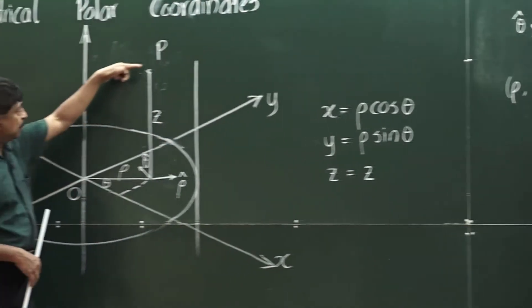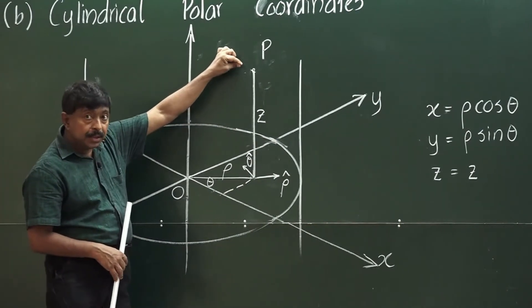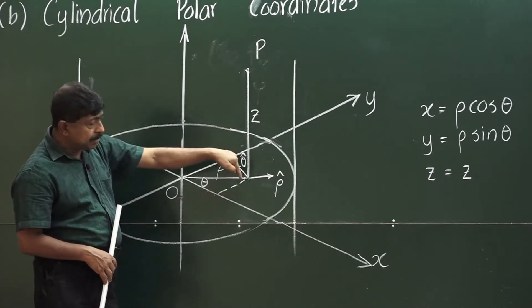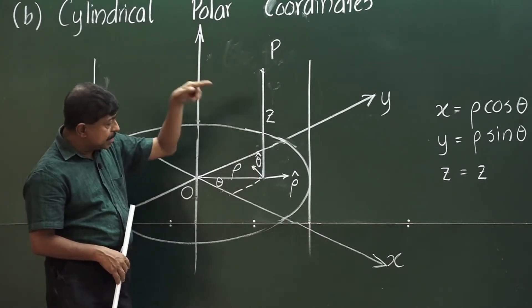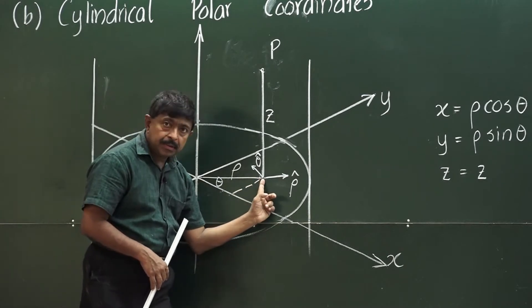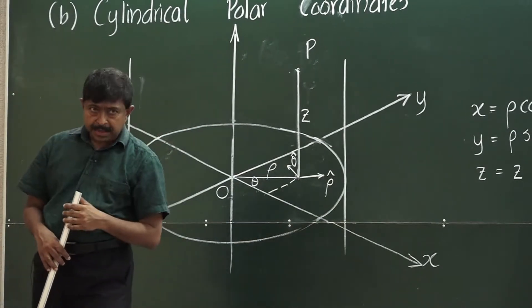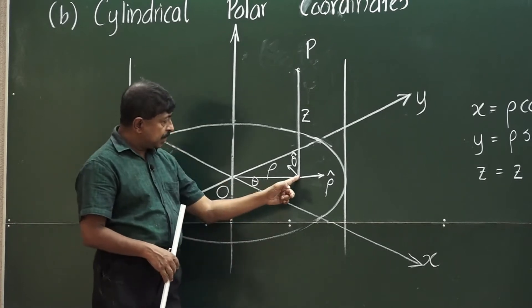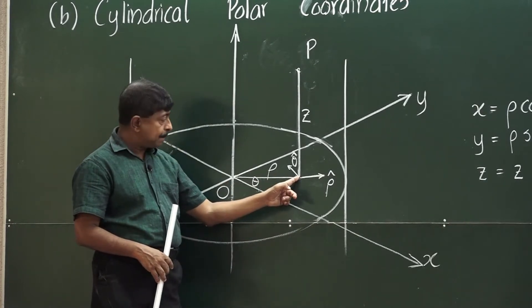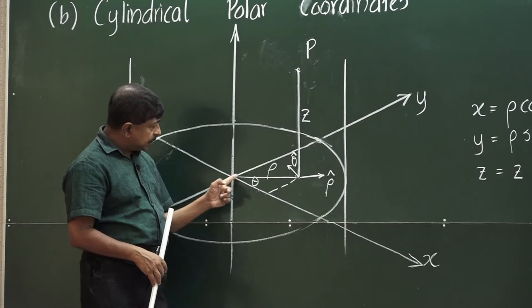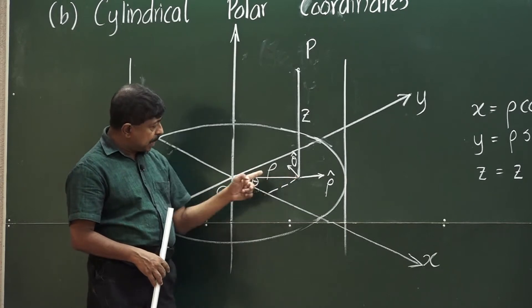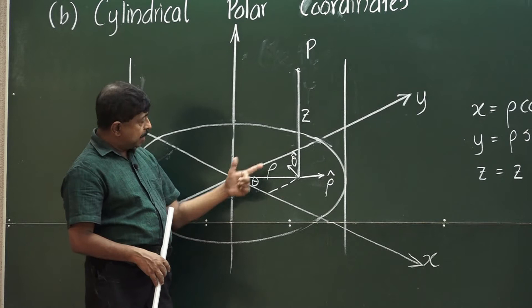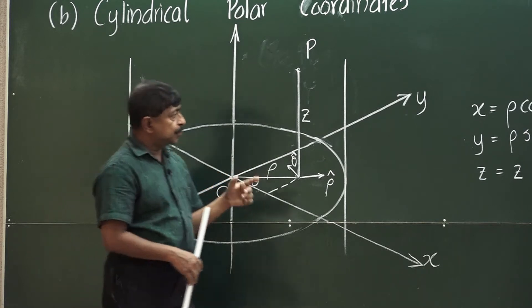So the relationship between rho, theta, and z is given like this: x is rho cos theta, y is rho sin theta, z is z. If you have any point in the space, you first project it onto the xy plane, then express that point in polar coordinates. So if the distance is rho and this angle is theta, x is rho cos theta and y is rho sin theta.